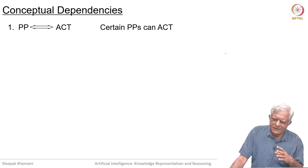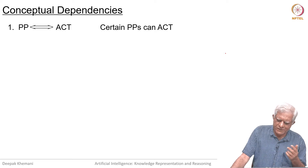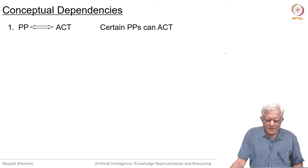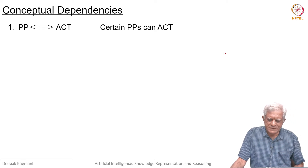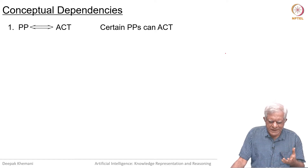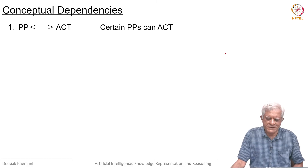Let us look at the different ways in which conceptualizations can be constructed. We have already seen that our agent can do an action — a picture producer can be related to an act.